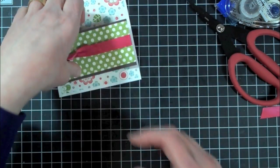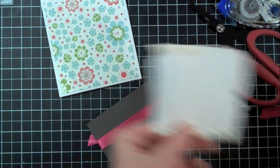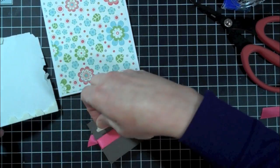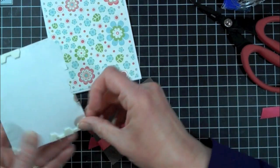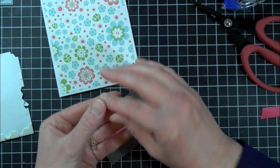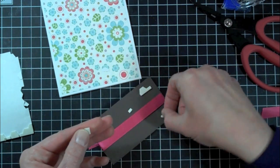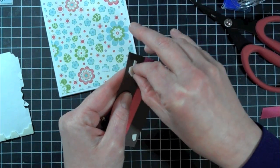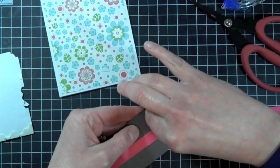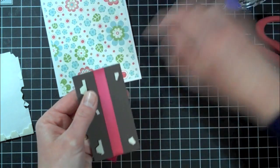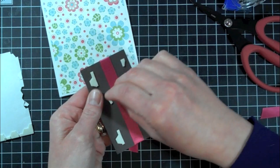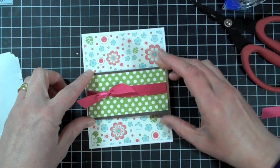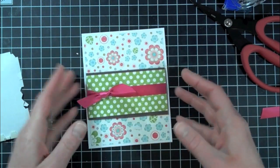And then this is going to get adhered with pop dots or dimensionals. And I'm running out here, so I'm just going to trim off some of the edges. I'm just going to trim these little tiny pieces. And then that'll get centered right in the middle of my card. Just like that.